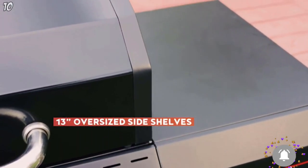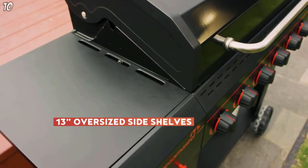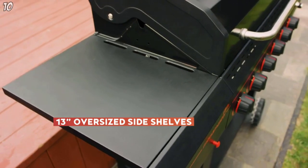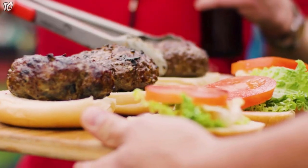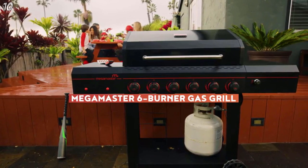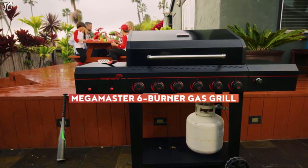54,000 BTUs of grilling power means fast fire and precise heat control. And since there's no such thing as too much space, we added 13-inch oversized side shelves that provide ample room for buns and topics. Master any occasion with the high-powered MegaMaster 6 Burner Gas Grill.